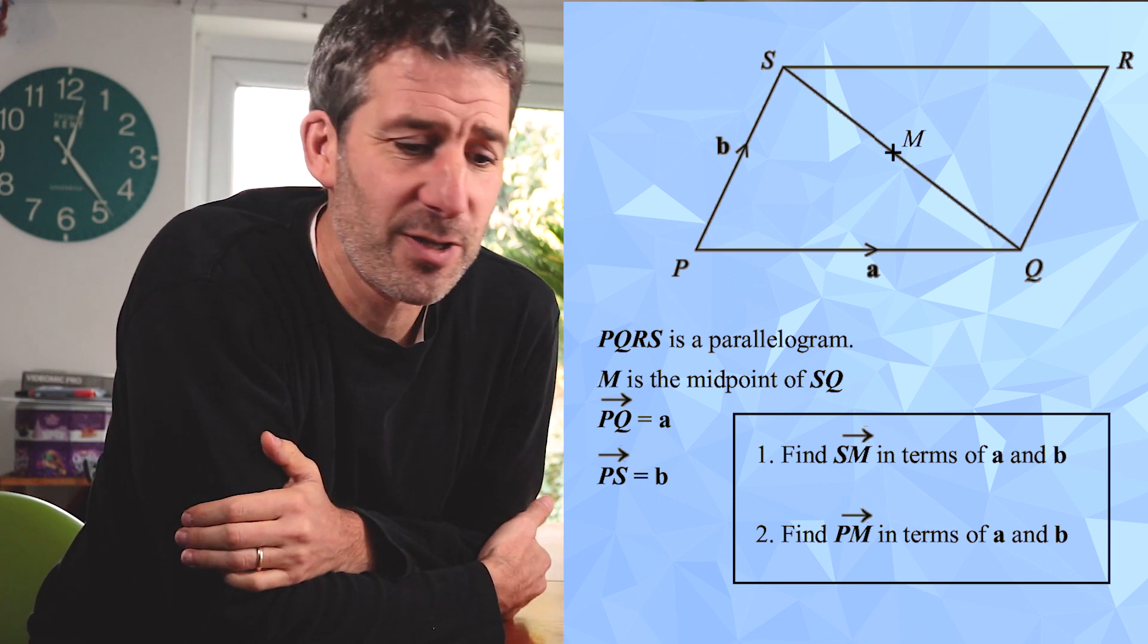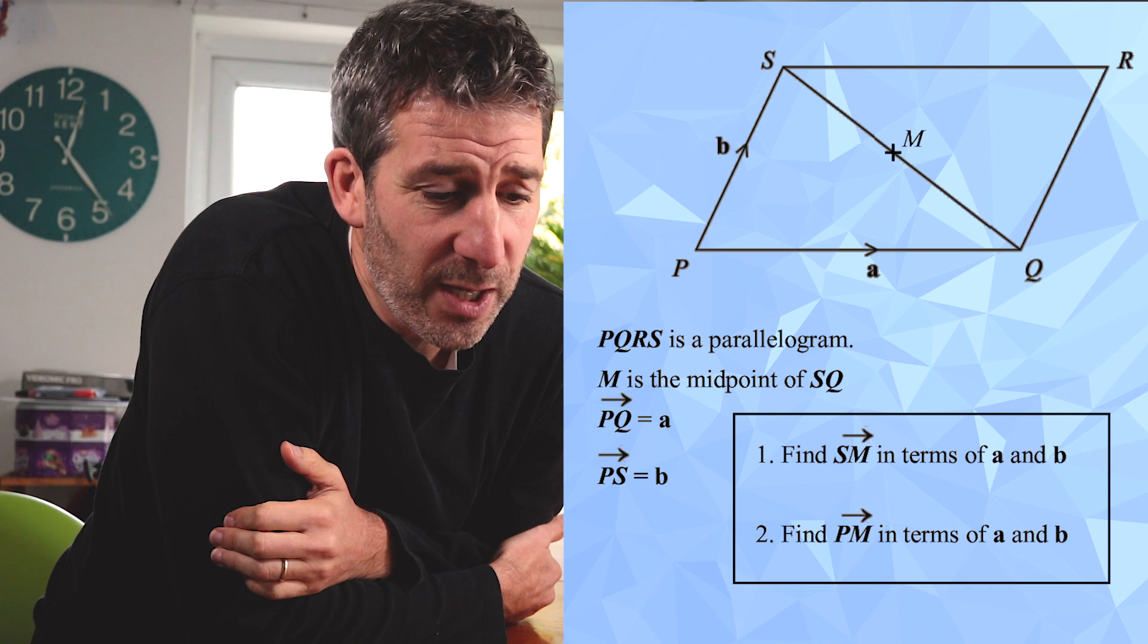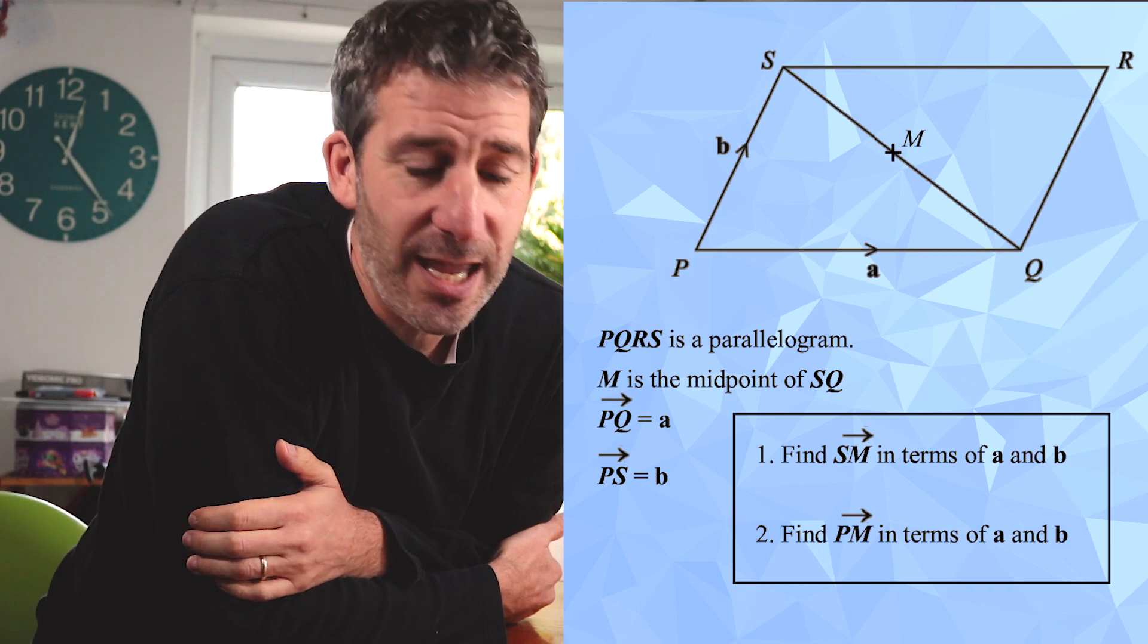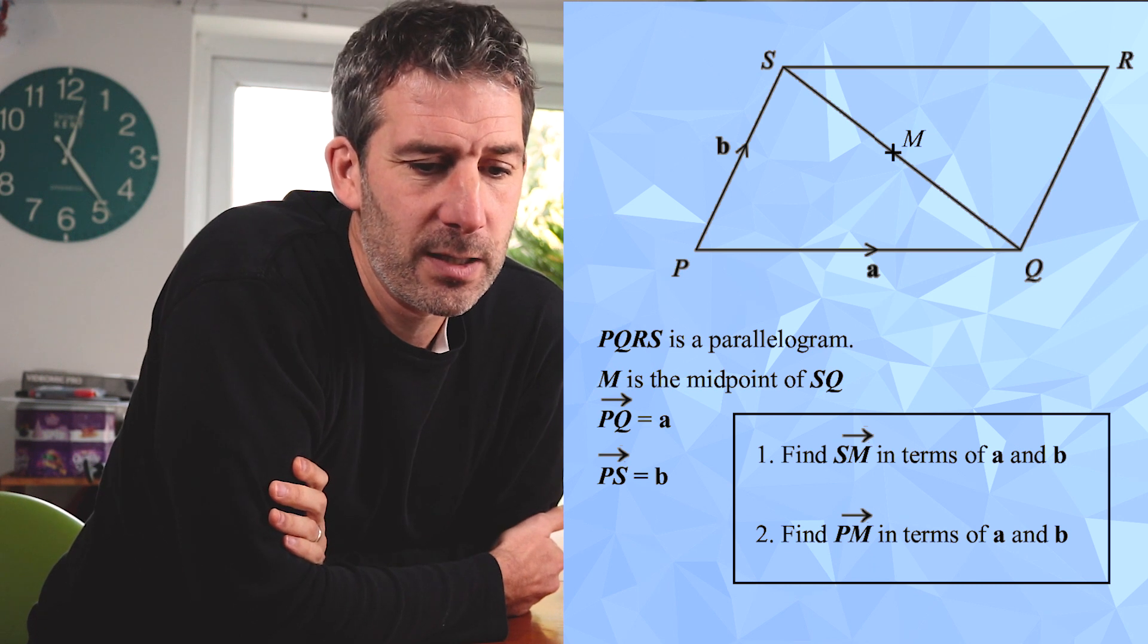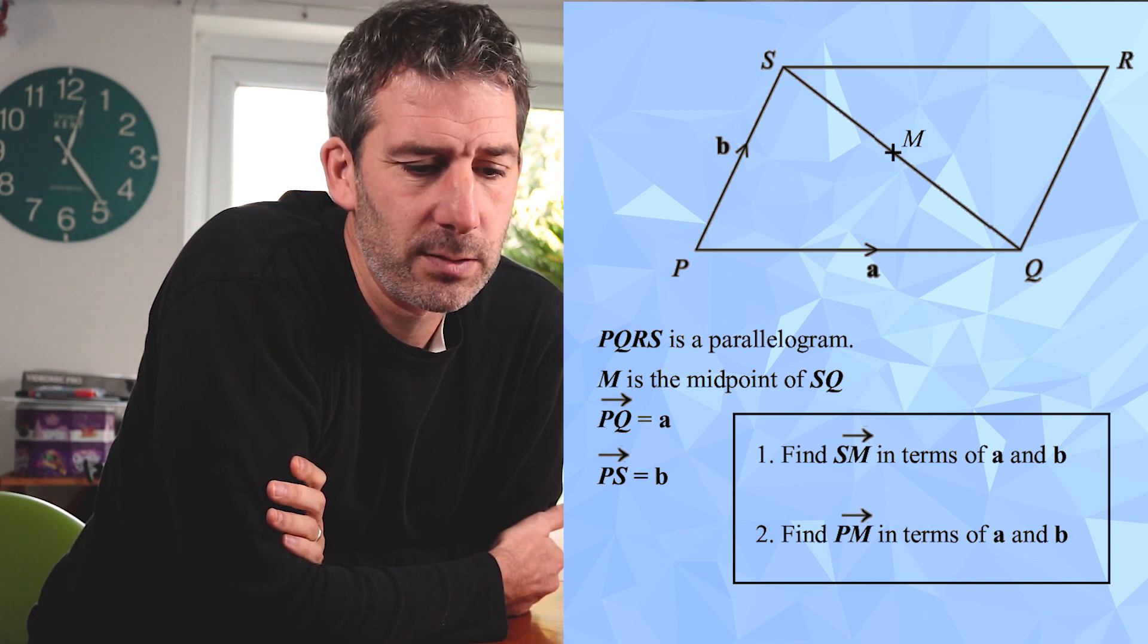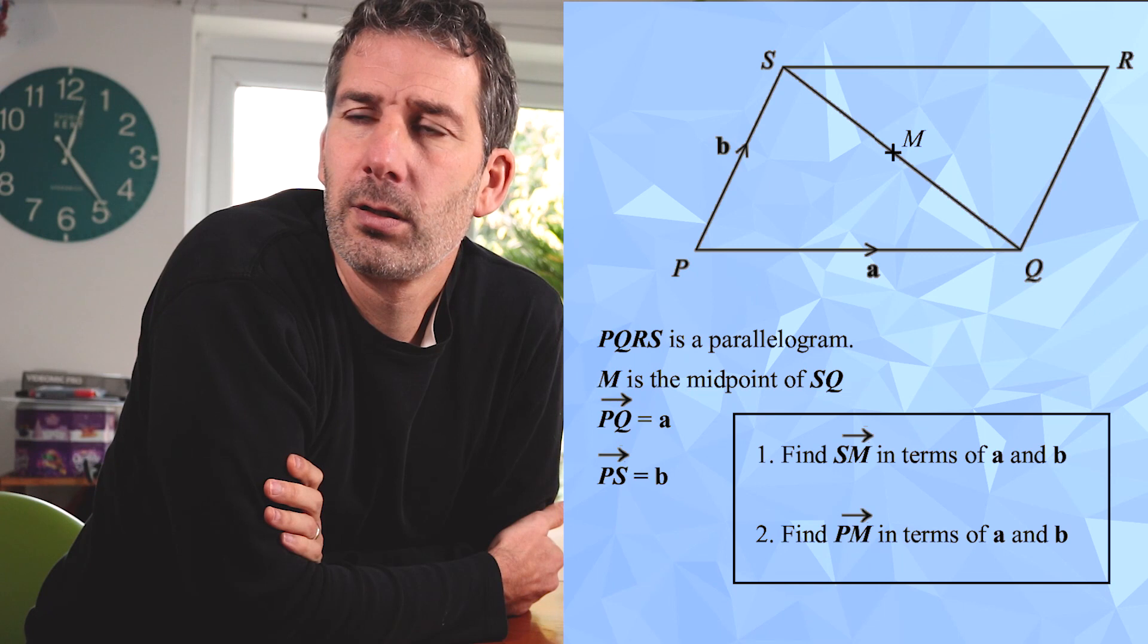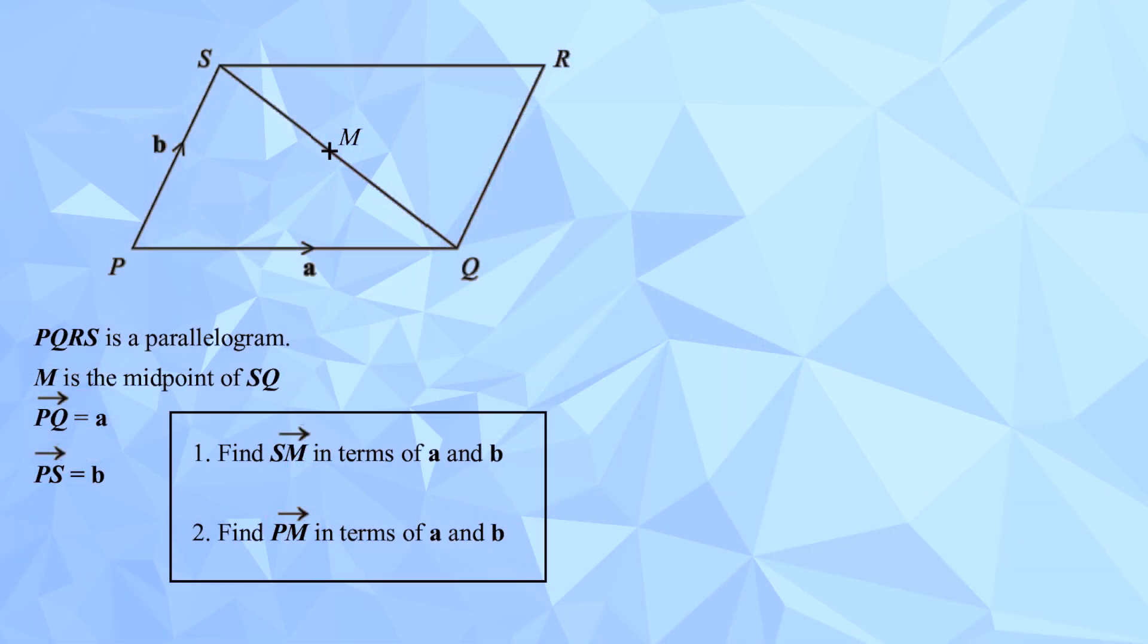Rod, talk me through it. So, the first bit, let's have a look. We were being asked to find the vector SM, or to describe the vector SM. Okay. So, to find the half, you need to go to S to Q. So, it would be negative b to positive a.